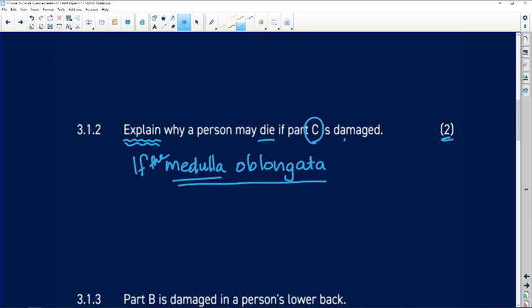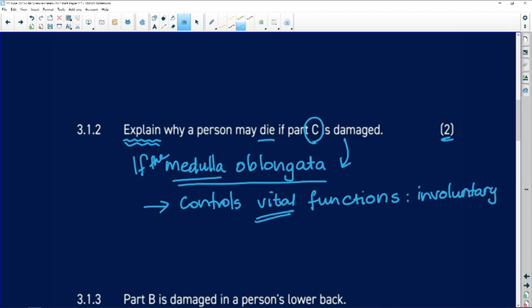Why would a person possibly die, in fact almost probably die, if the medulla oblongata is damaged? Remember, explanatory, so I would start off: if the medulla oblongata is damaged, what then? The medulla oblongata controls vital, very, very important functions that are not under your control. These functions are involuntary.